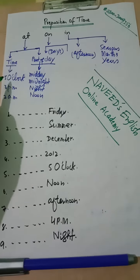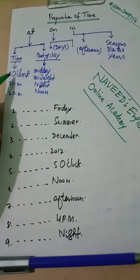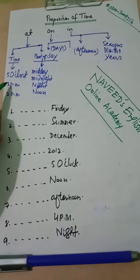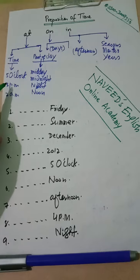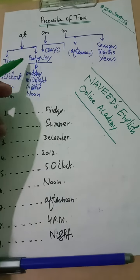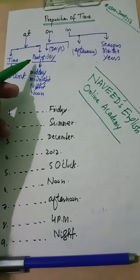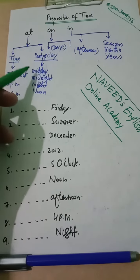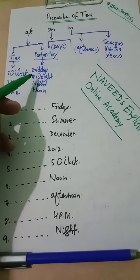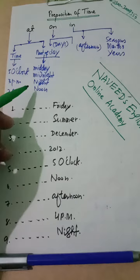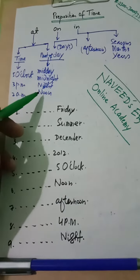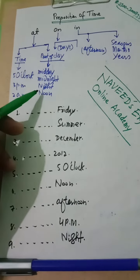At, time के साथ इस्तेमाल होता है, जैसे 5 o'clock, 2 o'clock, 3 p.m. और part of day के साथ भी At इस्तेमाल होता है — midday, midnight, noon, night.